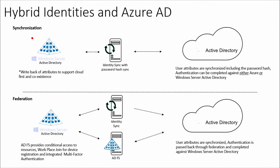Here we have a graphic breaking these down. In this hybrid identities scenario, we have identities on-premises and we also have Azure Active Directory. Azure AD is similar to Active Directory in some ways but different in others. In the top half of the diagram, we have synchronization — including writeback of attributes to support cloud-first and coexistence — powered by a synchronization engine.